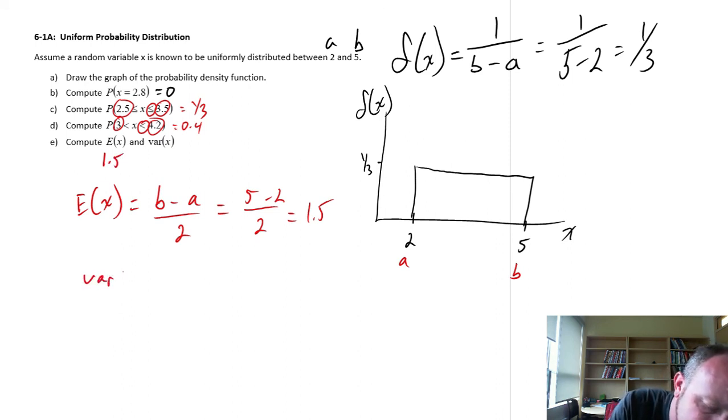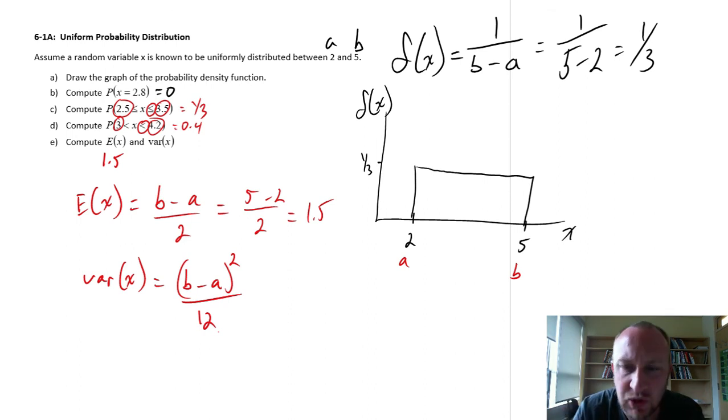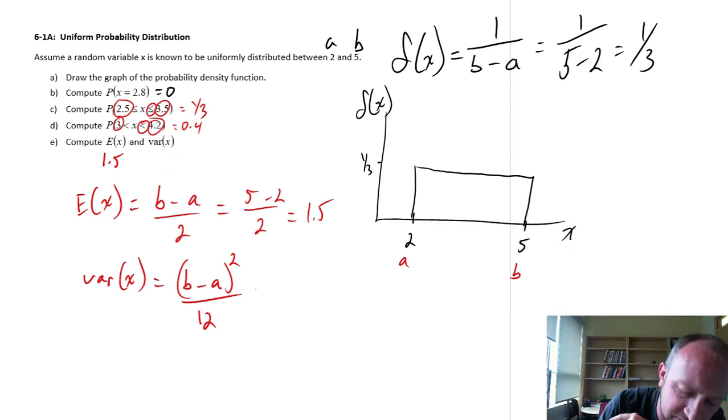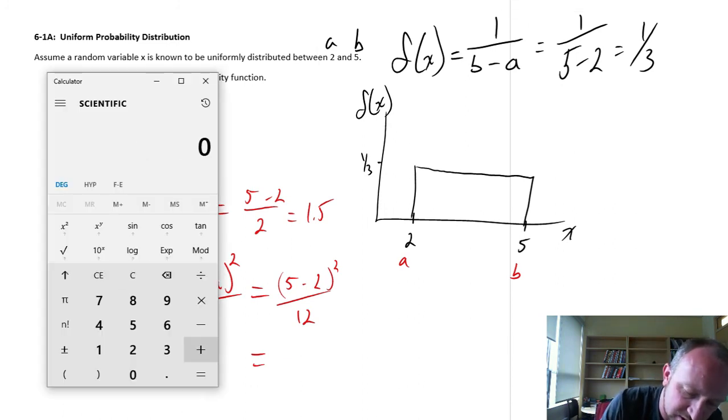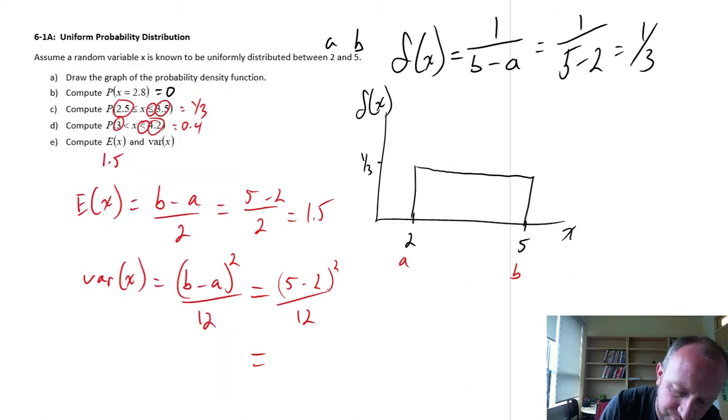And the variance, this is b minus a squared over 12. Now the value 12, don't worry about where that comes from, that's just part of the formula for this parameter of the distribution. So here I have 5 minus 2 squared divided by 12. Let me get my calculator here. This is going to be 3 squared divided by 12, so 0.75.